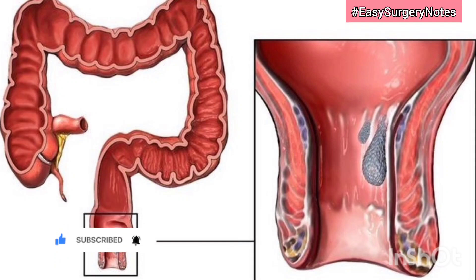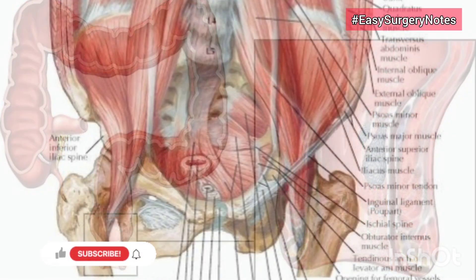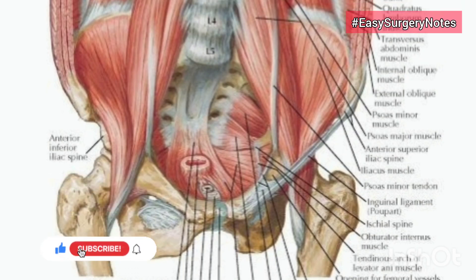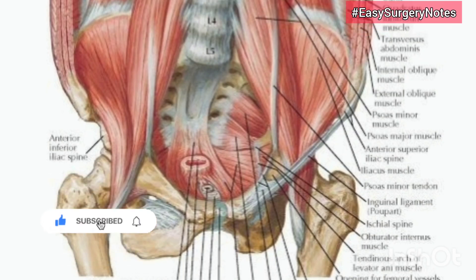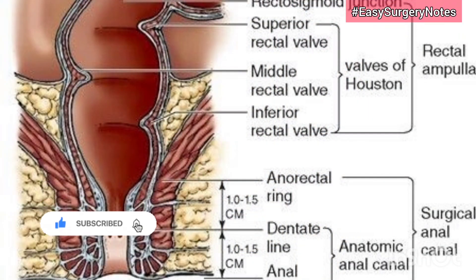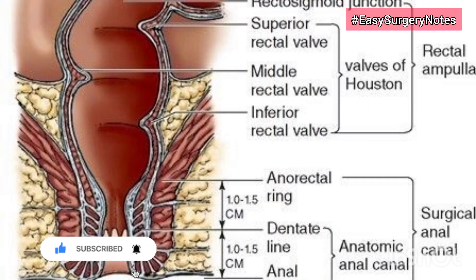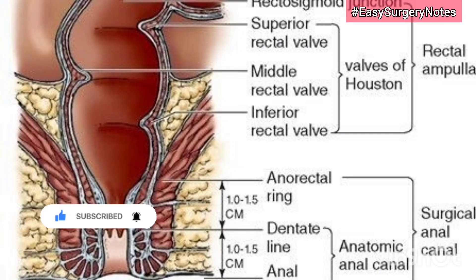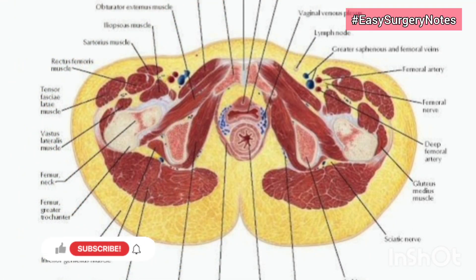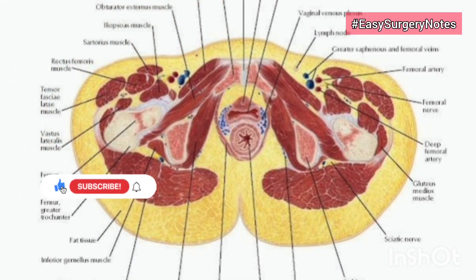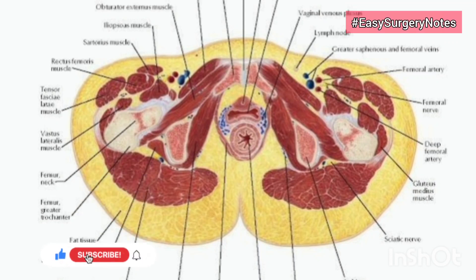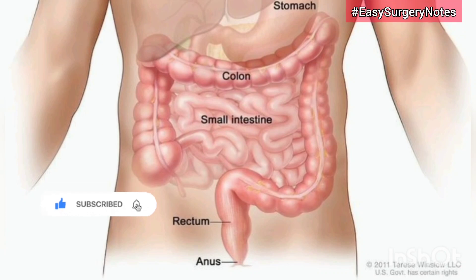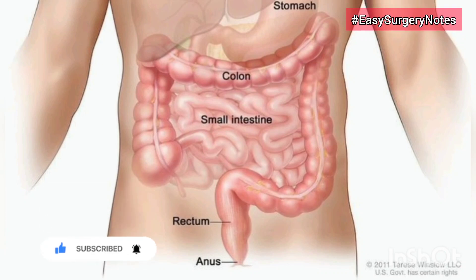The rectum is about 12 centimeters long; in the upper part it is 4 centimeters in diameter, but in the lower part it is dilated to form the rectal ampulla. Course of the rectum: it runs first downwards and backwards (sacral flexure) and finally downwards and forwards (perineal flexure). During this course it shows three lateral curves: upper lateral convex to the right, middle lateral convex to the left, and lower lateral convex to the right.